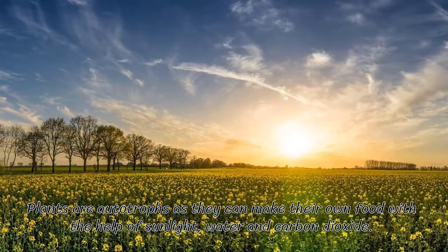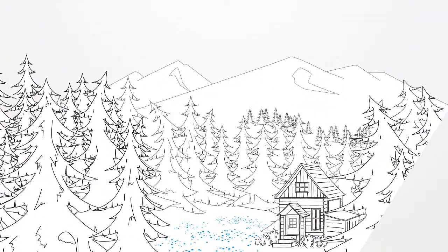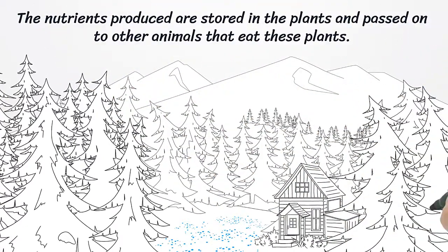Plants are autotrophic as they can make their own food with the help of sunlight, water, and carbon dioxide. The nutrients produced are stored in the plants and passed on to other animals that eat these plants.